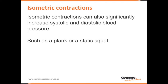Isometric contractions can also be risky for those that suffer with hypertension, as isometric contractions can significantly increase systolic and diastolic blood pressure. An example of this would be the plank or a static squat.